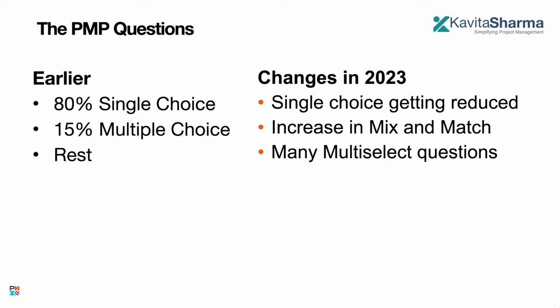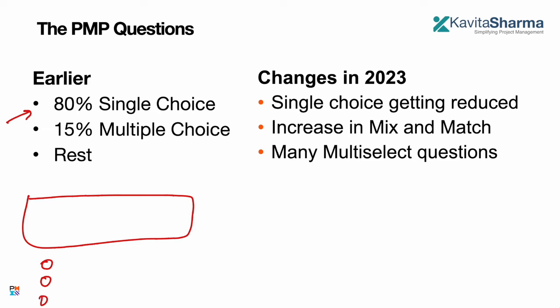Let's look at how PMP questions are gradually changing in 2023. Before 2023, 80% of questions used to be single-choice — a scenario with radio buttons. Now single-choice questions are getting reduced. When I did my exam, there were questions with two very similar answer choices and certain fillers. Now you'll see a very different pattern where all four answers describe different scenarios. Multiple-choice questions, which used to be around 15%, are now increasing to somewhere around 20 to 40% of what people are seeing.